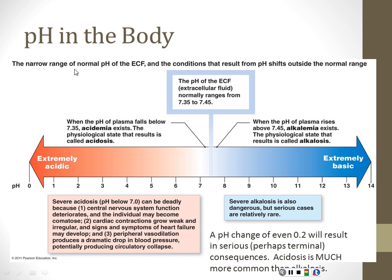Why do we care? Our acid range is pretty narrow. Outside of about pH 5.5 to 9.5, you're dead or on your way there. The only survivable range is that middle piece. Anything below 7.0 is severe acidosis; anything above 8.0 is severe alkalosis. Acidosis is much more common than alkalosis because we produce acids — our metabolism tends to make acids.